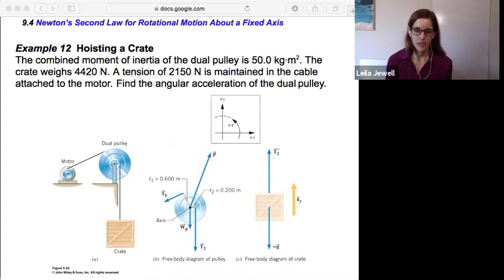We have this picture given to us of the motor, the dual pulley, and the crate. The thing to note about a dual pulley is it has two different radii. Notice, attached to the motor,